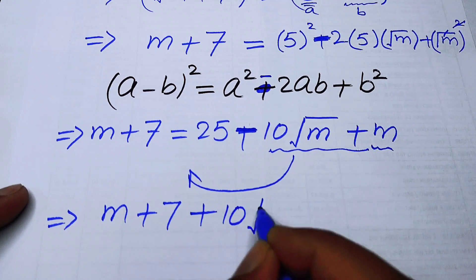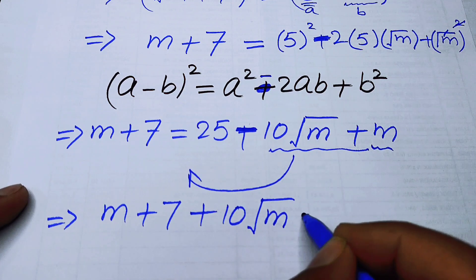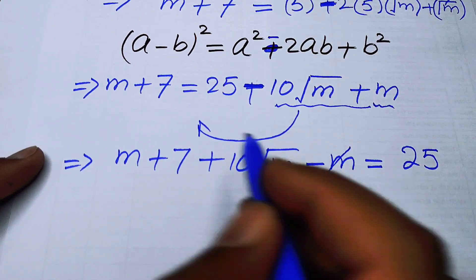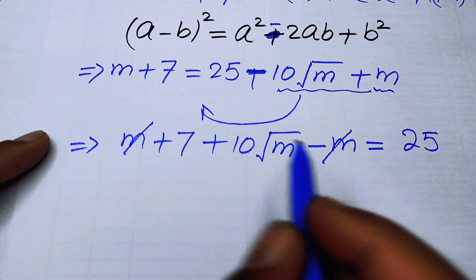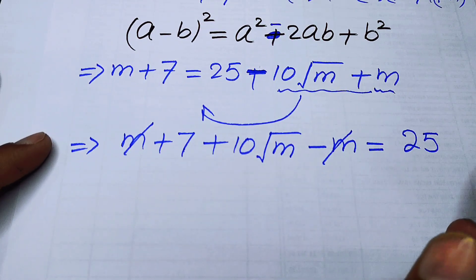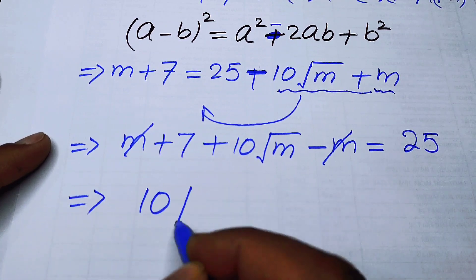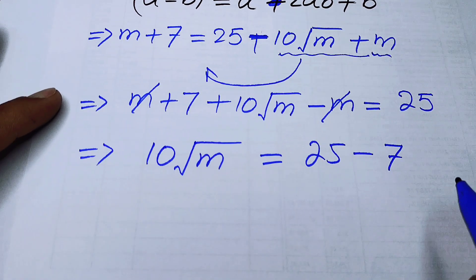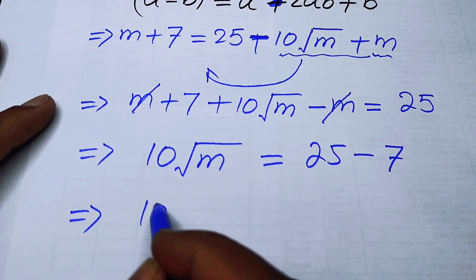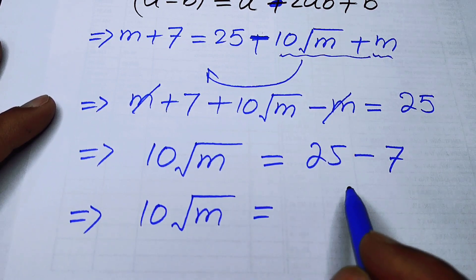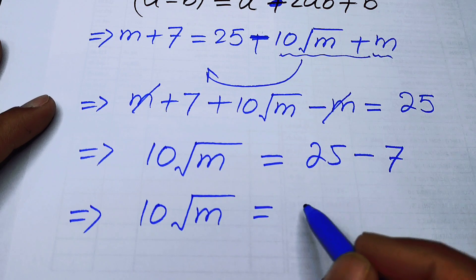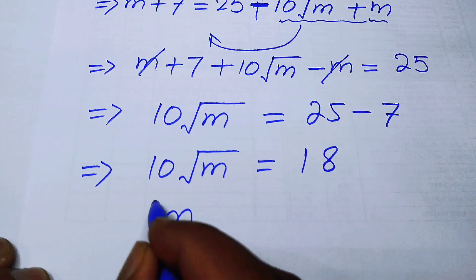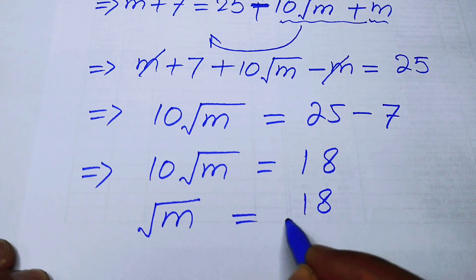We have m + 7 + 10√m - m = 25. The +m and -m cancel, leaving 7 + 10√m = 25. Taking 7 to the right hand side gives 10√m = 25 - 7 = 18. Dividing both sides by 10 gives √m = 18/10.